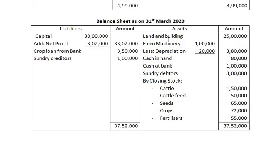In the balance sheet: under liabilities we have capital, net profit added to capital, crop loan from bank, and sundry creditors. Under assets we have land and building, farm machinery less depreciation, cash in hand, cash at bank, sundry debtors, and closing stock. The balance sheet is tallied. Thank you.